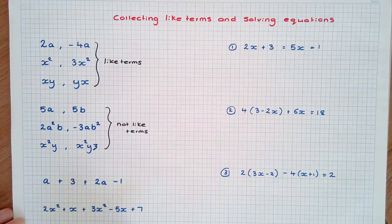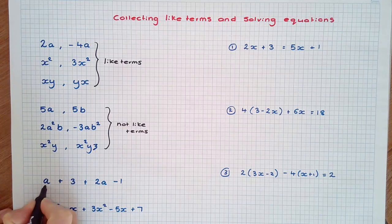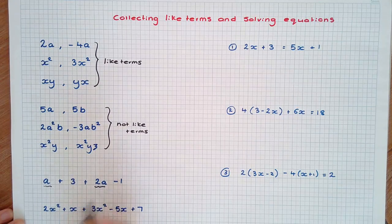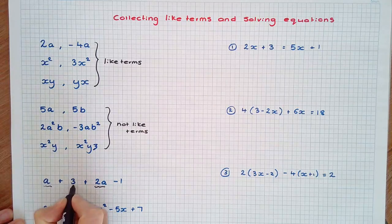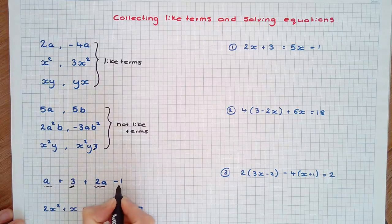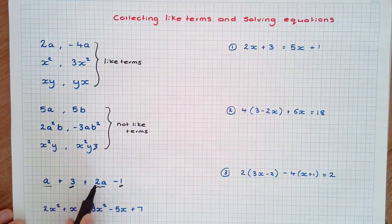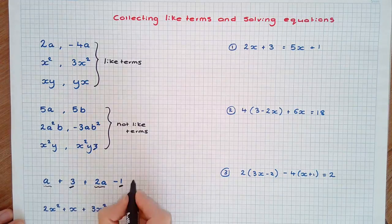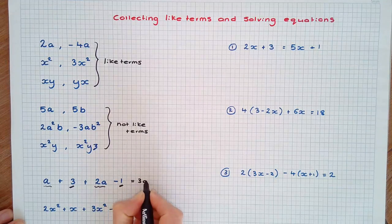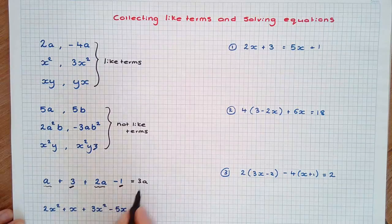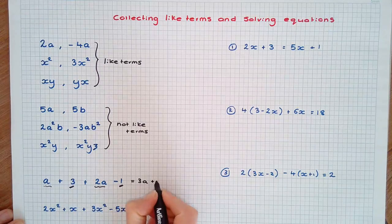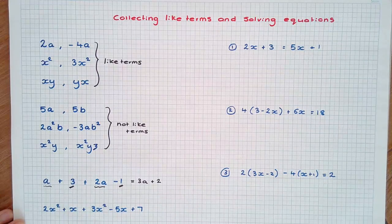Like terms can be added and subtracted. Here, a and 2a are like terms and 3 and negative 1 are like terms. We can combine the like terms so a plus 2a equals 3a, and 3 minus 1 equals 2, and we're adding 2 there.